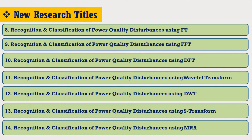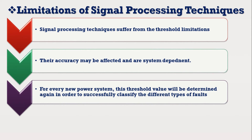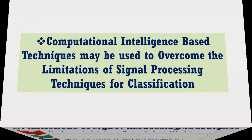Signal processing techniques have the ability to identify and classify faults or power quality disturbances. However, these techniques suffer from threshold limitations, which may affect their accuracy. They are also system-dependent — when the power system size or voltage levels change, a new threshold value must be determined to distinguish between faults or power quality disturbances.